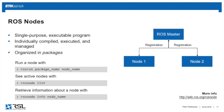A ROS node is essentially a program that runs on your PC — a single-purpose executable program. You can compile, run, and manage them individually. These are the building blocks of your program. Nodes are organized in packages — the package name groups related nodes together. Each individual node needs to register with the ROS master to enable communication.